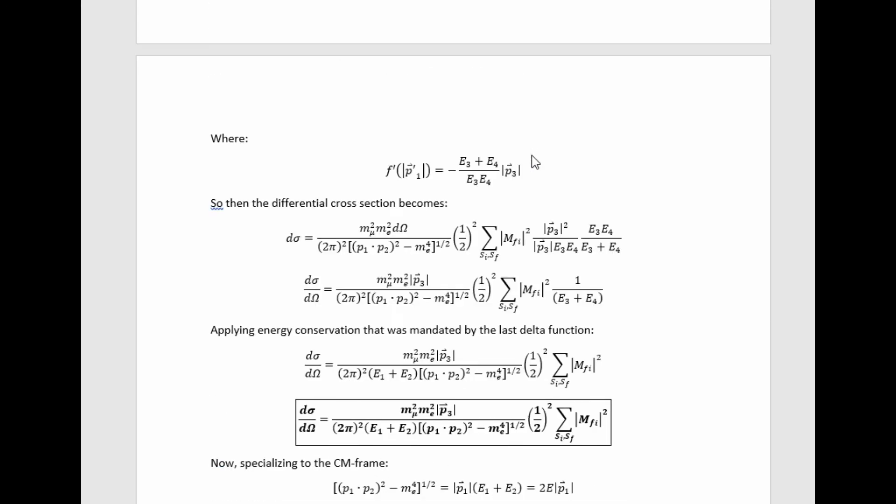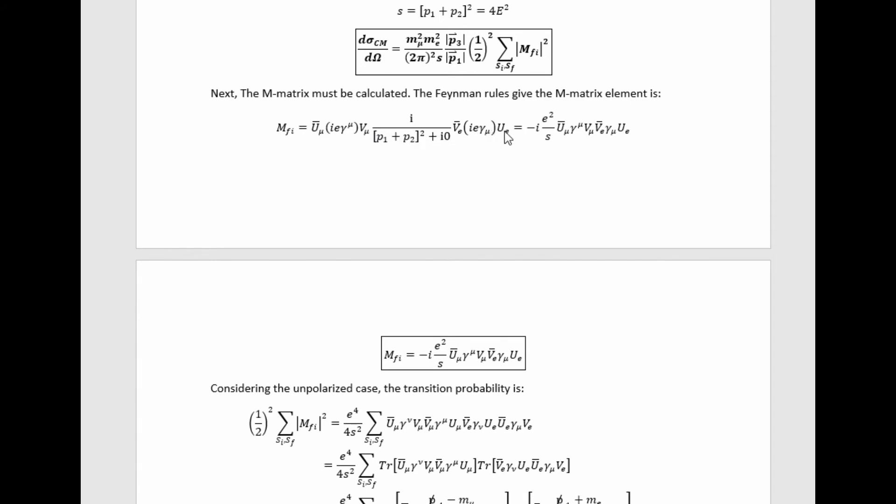this is the Feynman diagram that we're looking at for this tree level process and this is the set of Feynman rules we're using. The Feynman amplitude according to that Feynman diagram and those Feynman rules looks like this. Simplifying it gives this.